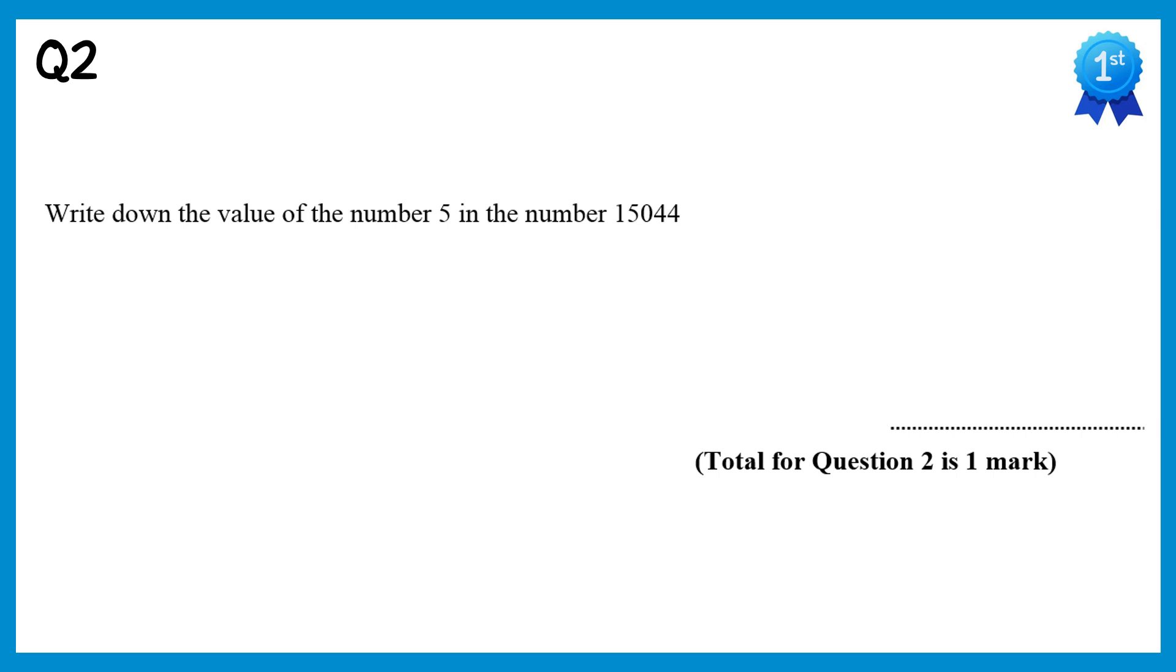In this question we need to find the value of the number 5 in this number. If we go from the right hand side the first 4 is the units column, the next 4 is the tens, the 0 is in the hundreds and the 5 is in the thousands. So this number represents 5,000.